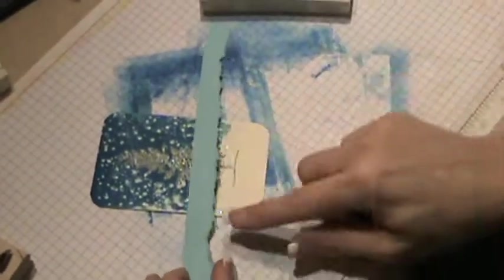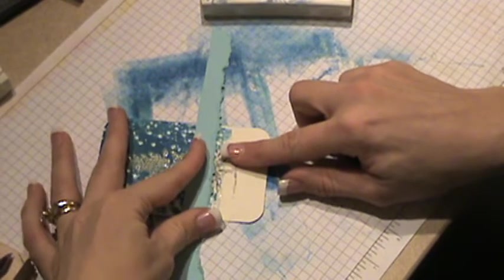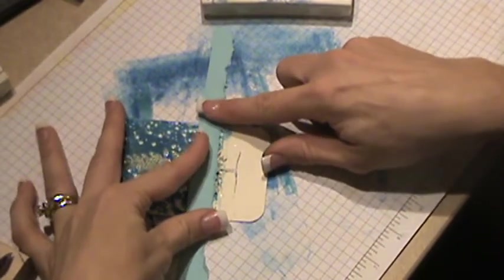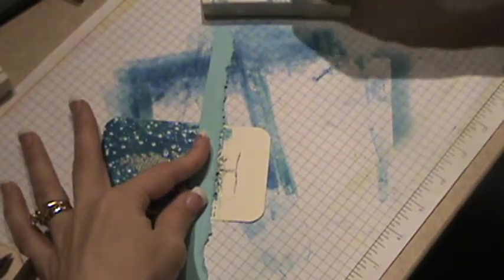Okay, cardstock torn and I'm going to put it a little bit above where I've already brayed, not too much, because I am using kind of a middle color ink between the Baja Breeze and the Pacific Point.